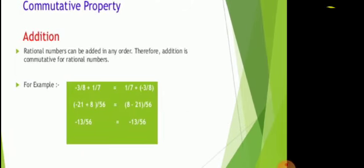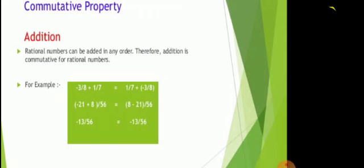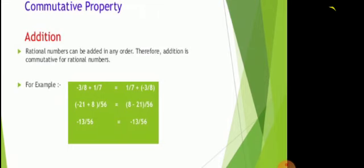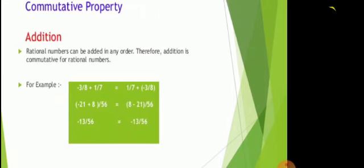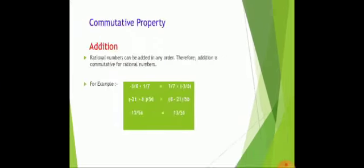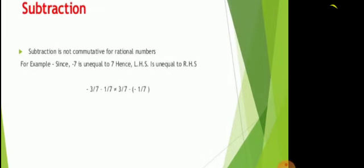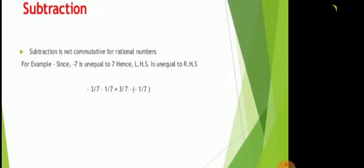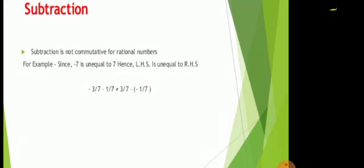Commutative property. Rational numbers can be added in any order. Therefore, addition is commutative for rational numbers. a plus b is equal to b plus a. Subtraction is not commutative for rational numbers. For example, since minus 7 is unequal to 7, hence LHS is unequal to RHS.